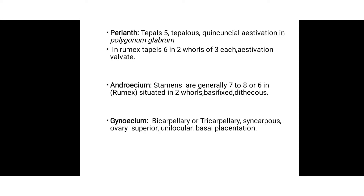In the androecium, generally six to eight stamens are present, but in Rumex dentatus they are six in number, arranged in two whorls of three each like the tepals. The attachment is basifixed, meaning the filament is attached at the basal portion. The anther is dithecous, meaning it has two cells. In the gynoecium, two or three carpels are present, so it is called bicarpellary or tricarpellary. The ovary is syncarpous, superior, unilocular with basal placentation, meaning the ovule is attached at the basal portion. The fruit is generally a nut type.